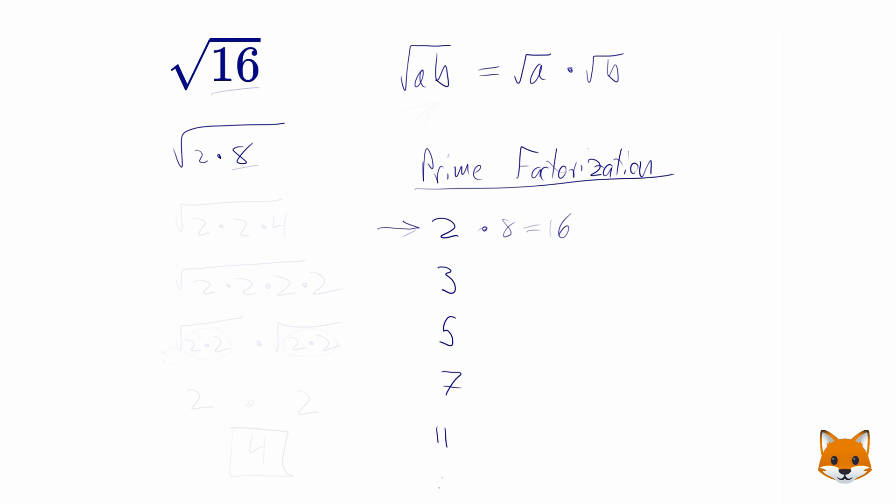So we notice, is 8 even? Yes, that means it can be divided by 2. So let's rewrite this again: 2 times 2 times 4. Notice that 4 is not a prime, so we're going to rewrite that again. This can be rewritten as 2 times 2 times 2 times 2.